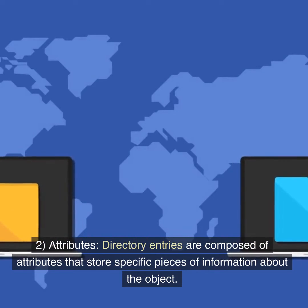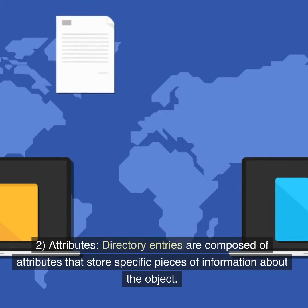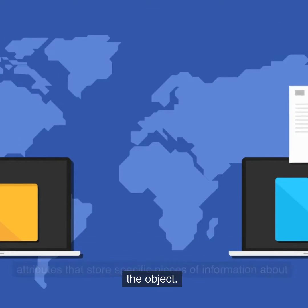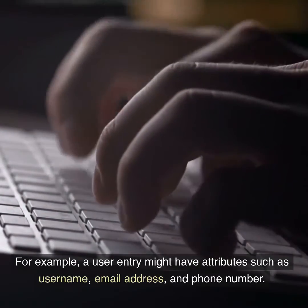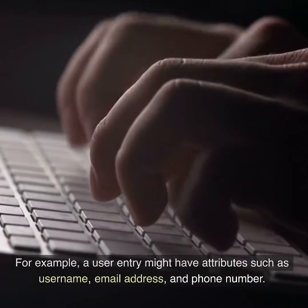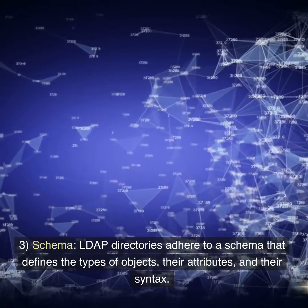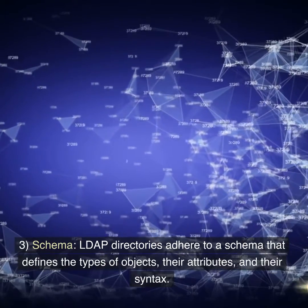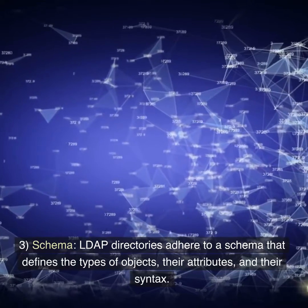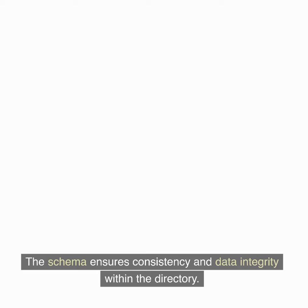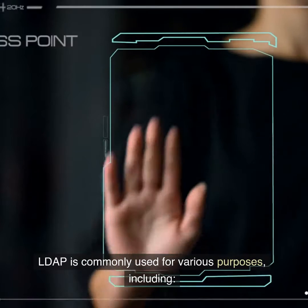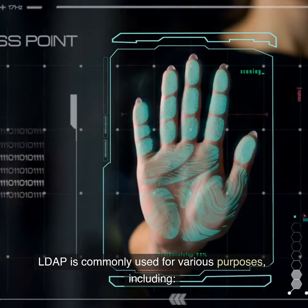2. Attributes. Directory entries are composed of attributes that store specific pieces of information about the object. For example, a user entry might have attributes such as username, email address, and phone number. 3. Schema. LDAP directories adhere to a schema that defines the types of objects, their attributes, and their syntax. The schema ensures consistency and data integrity within the directory.